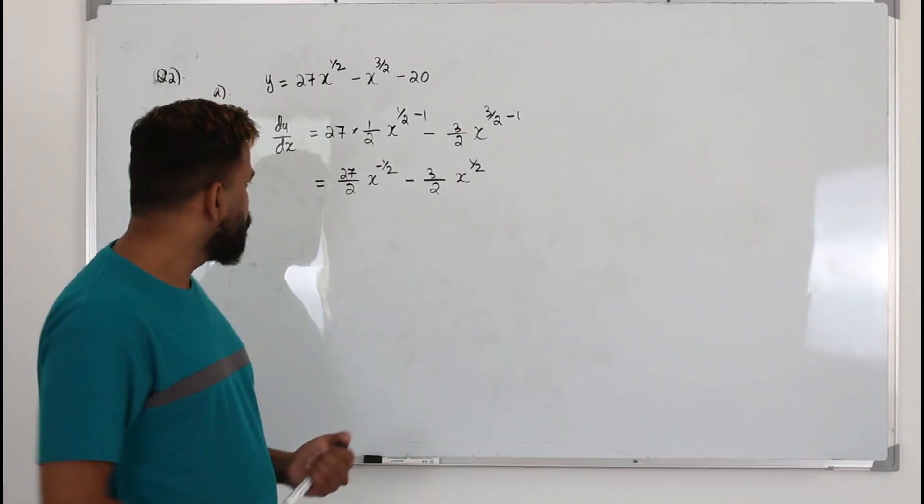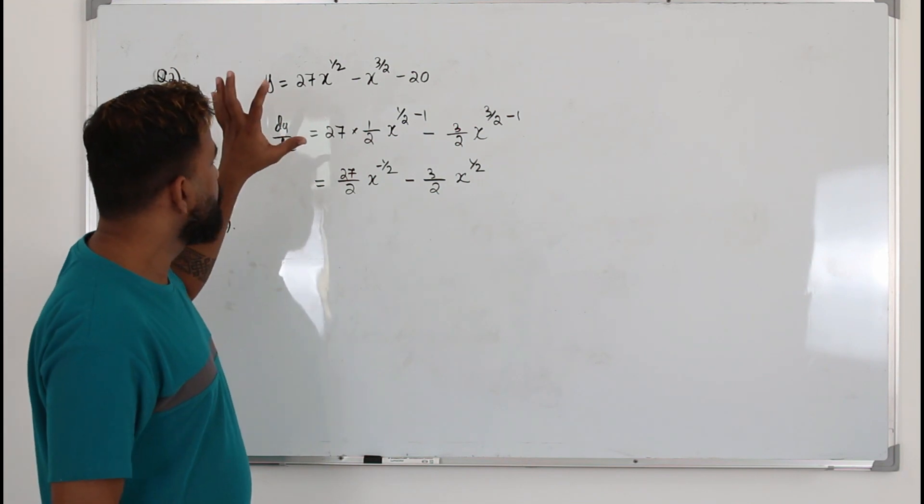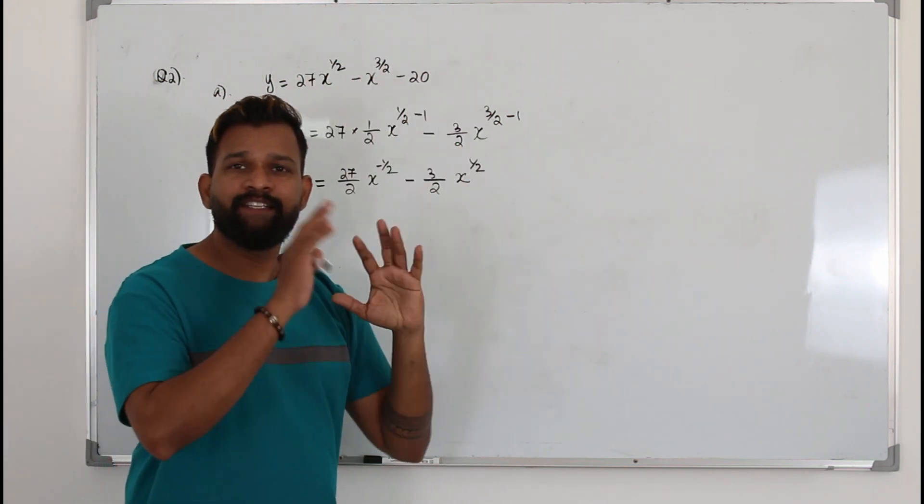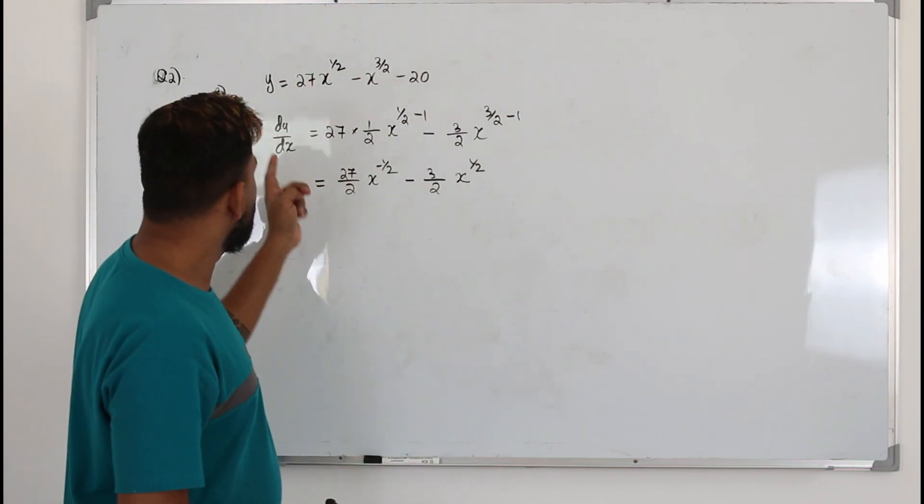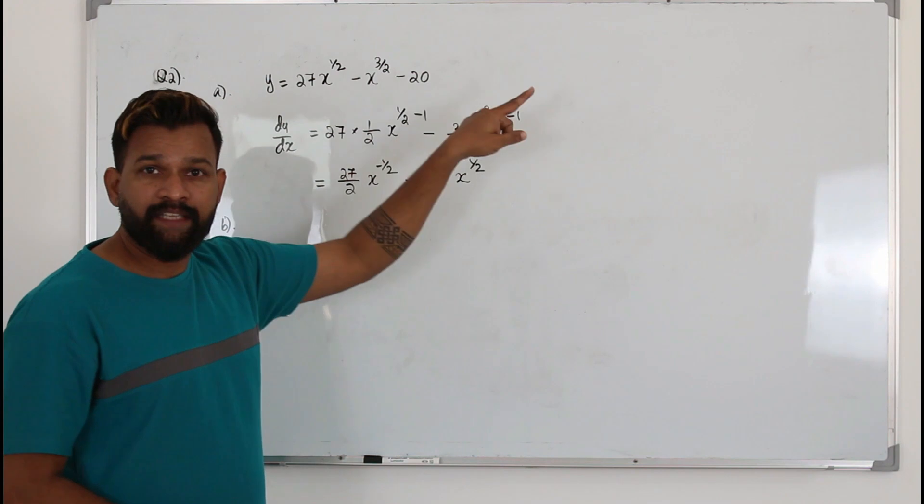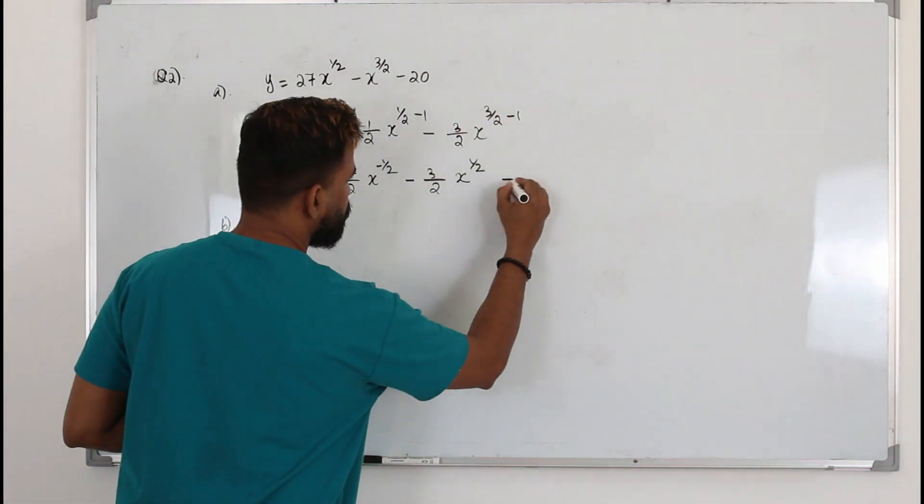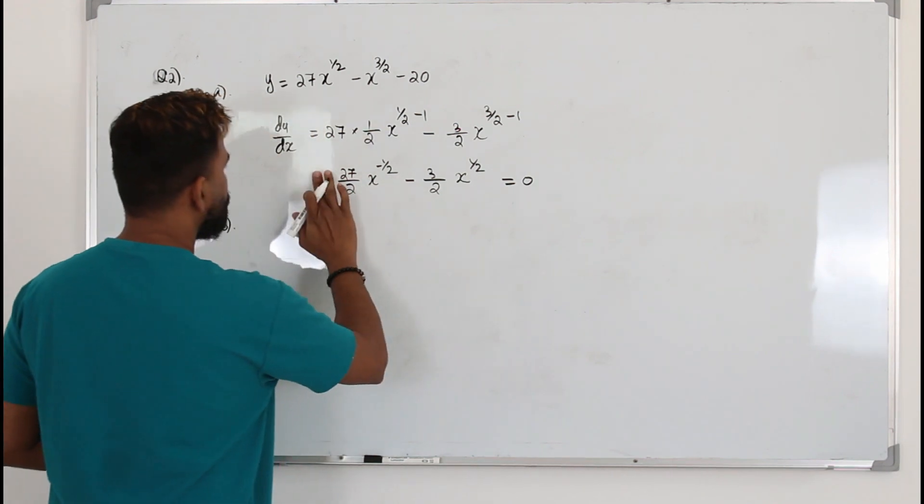Now in part b, they want you to find the coordinates of the stationary point of this function. The moment they say stationary point, you need to take the first derivative, put it equal to 0. So this thing equal to 0.